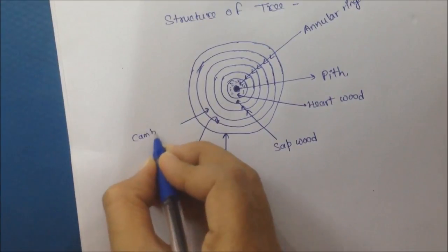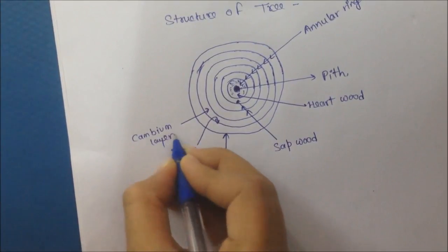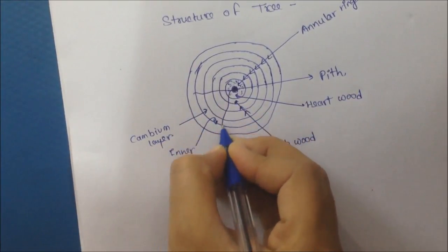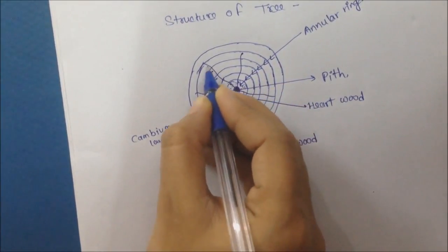A thin layer between sapewood and inner bark is called cambium layer. And there are some radial lines from pith to cambium layer are called medullary rays.